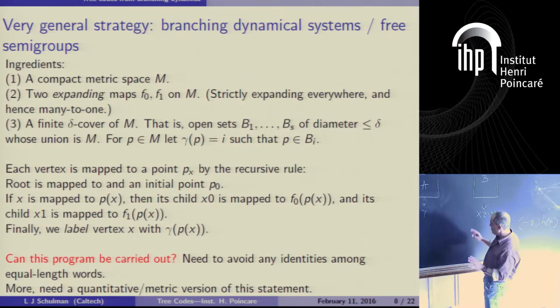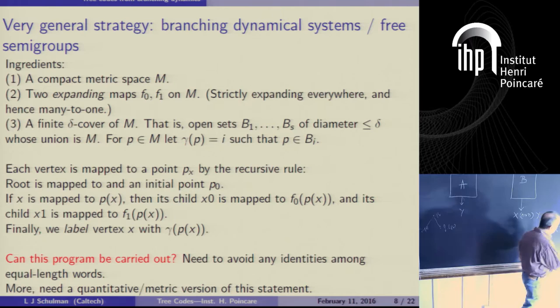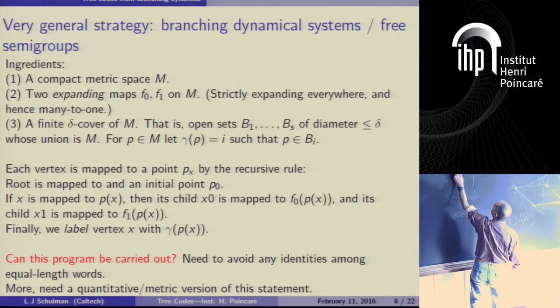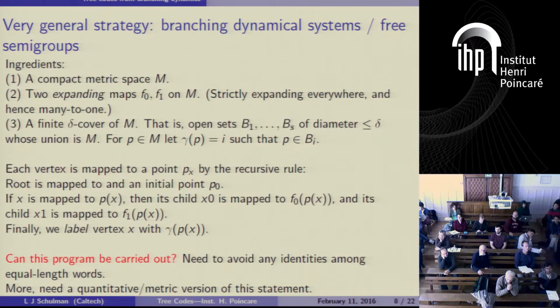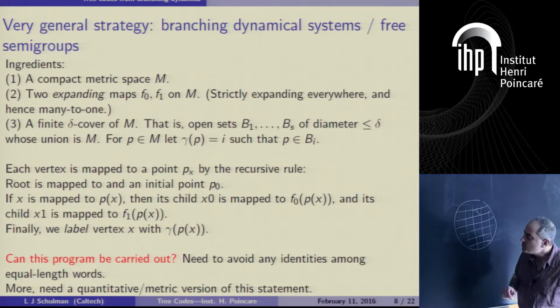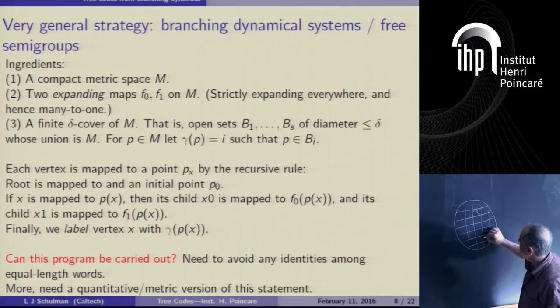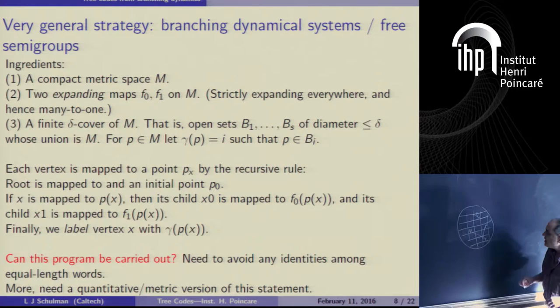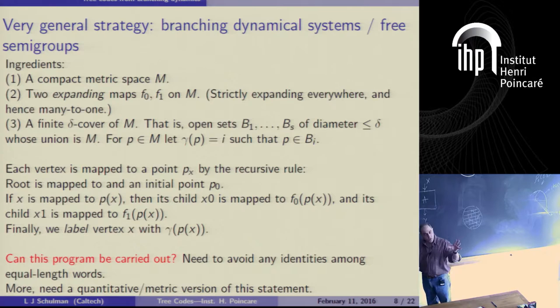Let me convey the broad intuition, because then there'll be a particular construction. So again: we have some compact manifold M. We've got a cover of it — neighborhoods of small diameter delta — and functions F_0 and F_1 that map a point p to other points that label the children. One thing to point out: these maps need to be expanding, because if they're not, I have my large tree code and eventually by a counting argument there'll be two points p_x and p_y that are very close together in the space.